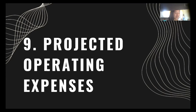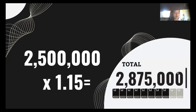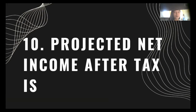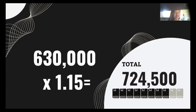Number nine, projected operating expenses: operating expenses of 2,500,000 times 1.15 equals 2,875,000, which is the projected operating expenses. The projected net income of 630,000 times 1.15 equals 724,500, which is the projected net income after tax.